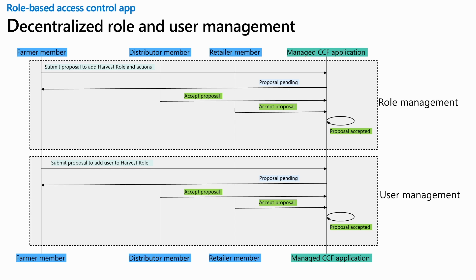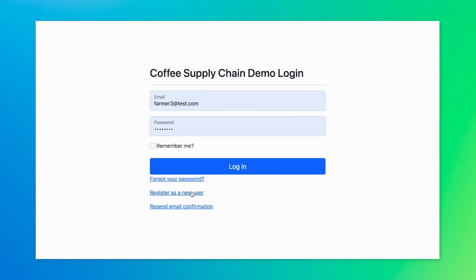Before starting the demo, I want to briefly reiterate the four personas and the actions they can perform. A farmer can harvest the coffee beans and advertise them for sale. A distributor can purchase from the farmer and distribute to the warehouse owned by retailers. A retailer can process the coffee beans and put them up for sale on their website. A consumer can purchase from the retailer's website. With that, let's see a demo of the application, which uses the decentralized role-based access control application to maintain authorization policies.